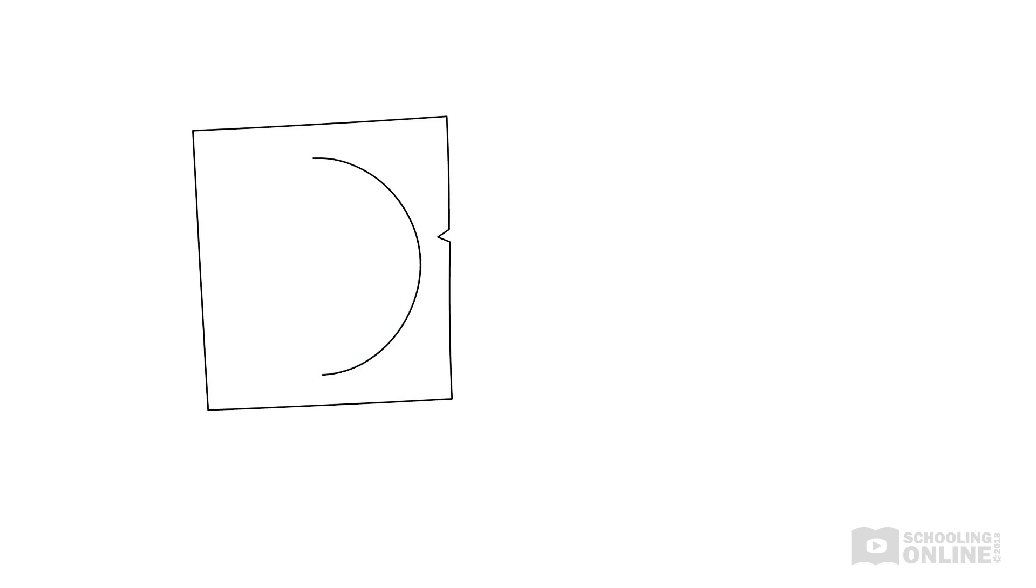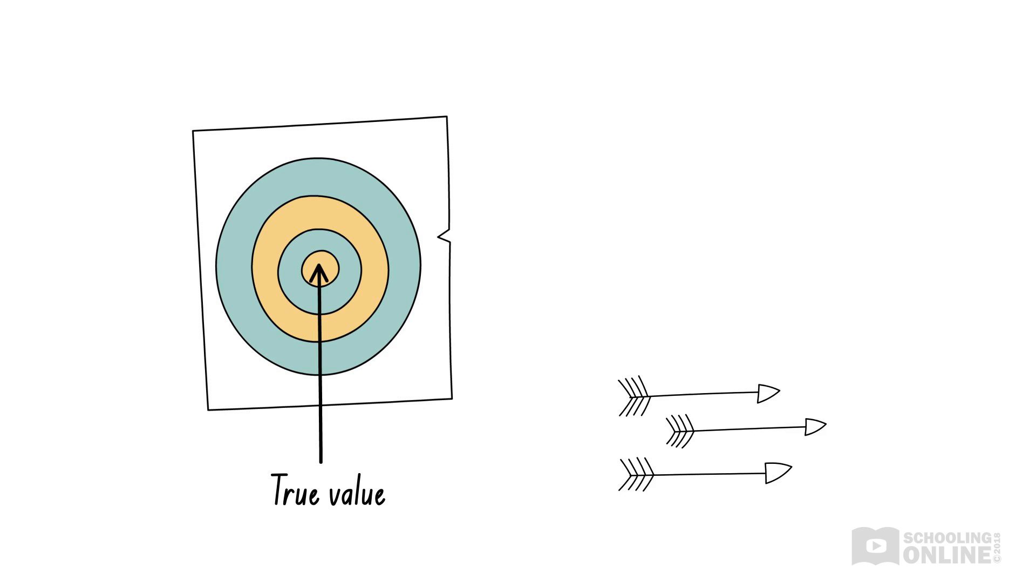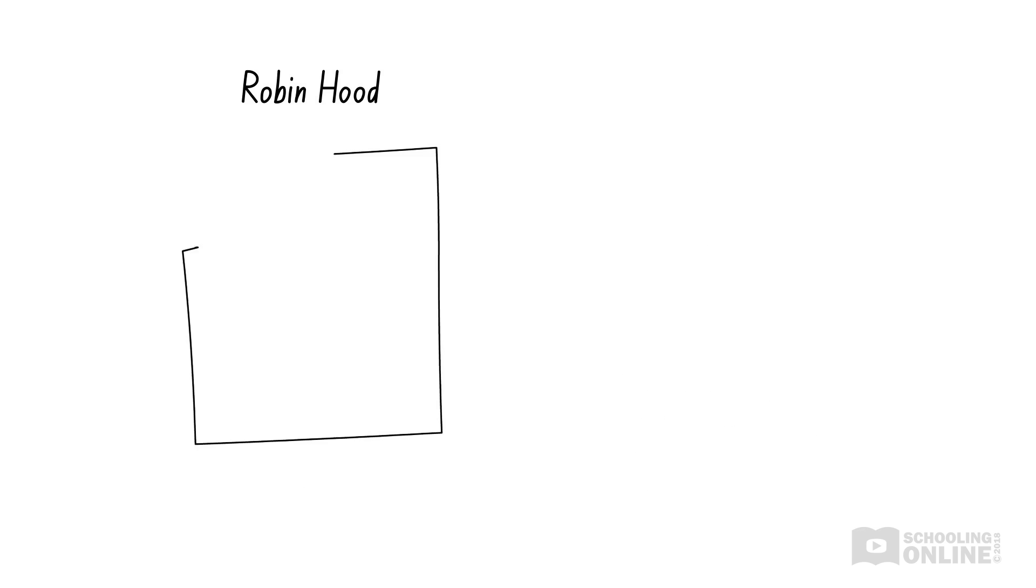This works the same way as accuracy in science. The bullseye represents the true value of what we are trying to measure. The arrows are the experimental data we obtained. If our experimental method is accurate, like Robin Hood, then our results will be, in general, close to the true value.